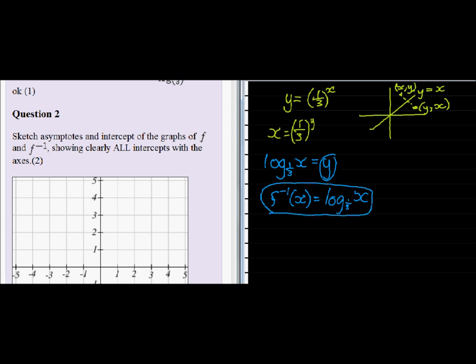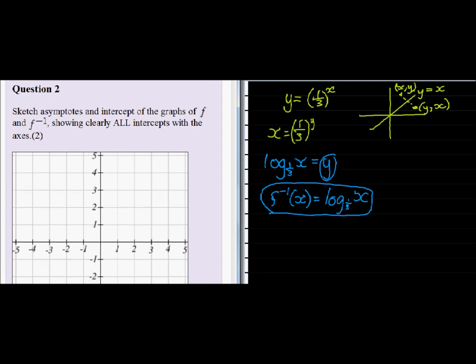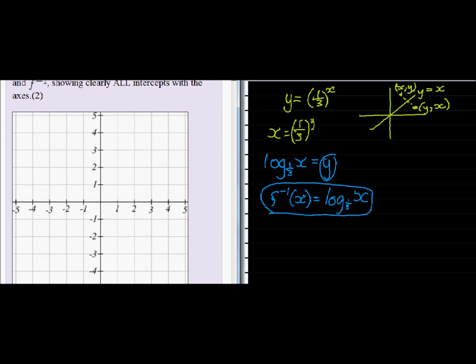We must sketch both of those, actually just the asymptotes and the intercepts of those two graphs, and show clearly all intercepts with the axis.